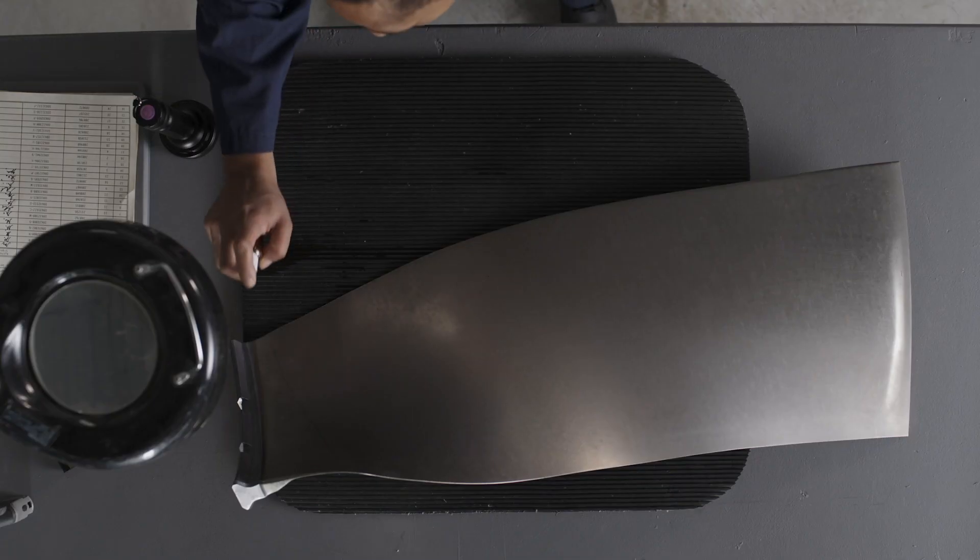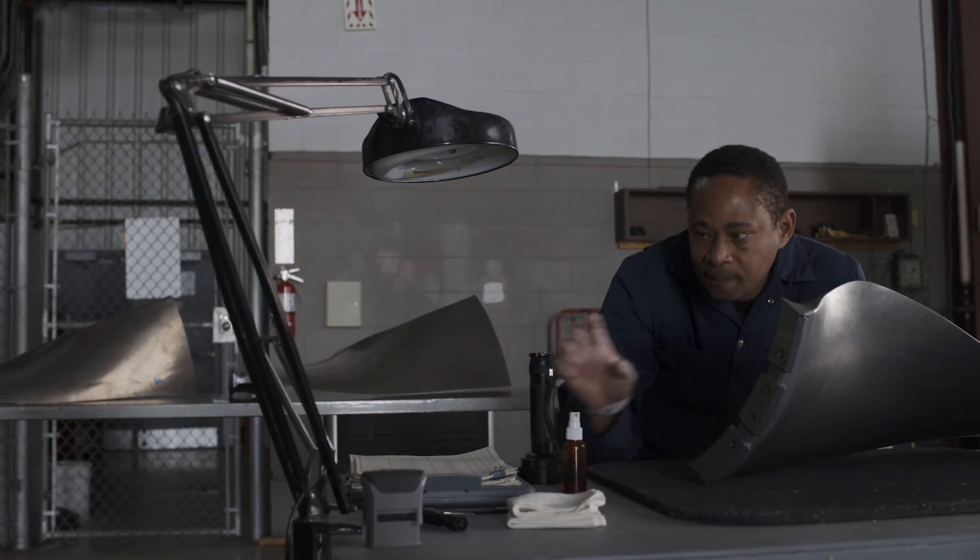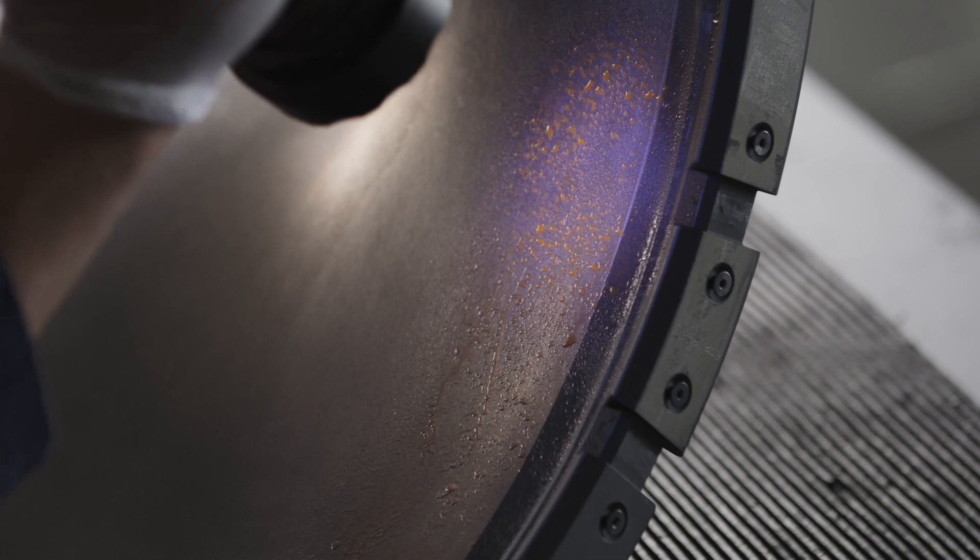During the overhaul, the protective coating on each of the blades is stripped. Then a fluorescent dye is used to help identify any fatigue cracking.